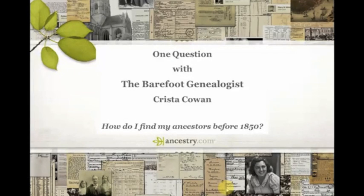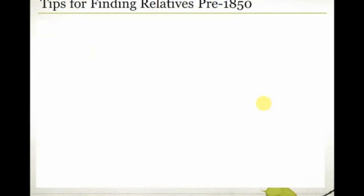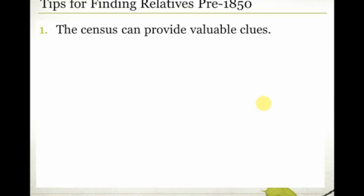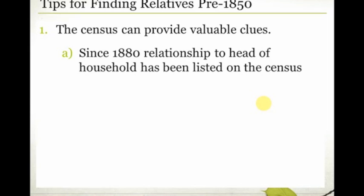My first tip for finding relatives pre-1850 actually has to do with the census. For those of you who are new to genealogy, let me explain why this is even a question. Since 1880, the census lists the relationship of everybody in the household to the head of household. In the 1880, 1900, 1910, 1920, and 1930 censuses, it will list the head of household and then say wife, son, daughter, mother-in-law, and so on. Those records aren't always precisely accurate, but they're usually pretty great clues.